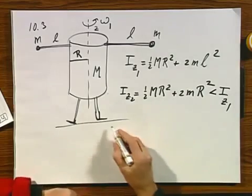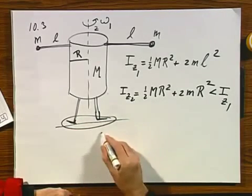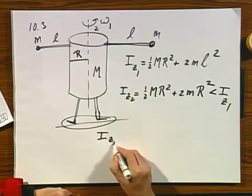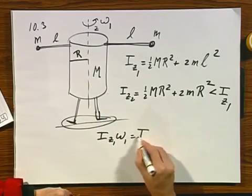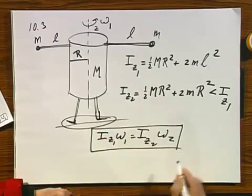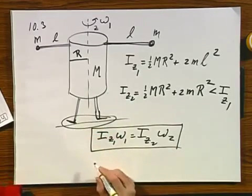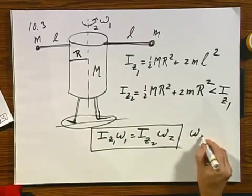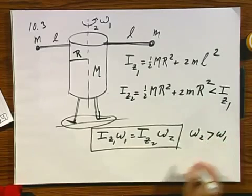If the person pulls her arms in and is not cheating here, then I_z1 omega 1 must be I_z2 omega 2. In other words, angular momentum is conserved if there are no external torques, and therefore omega 2 must be larger than omega 1.